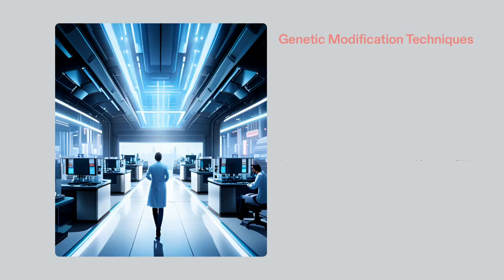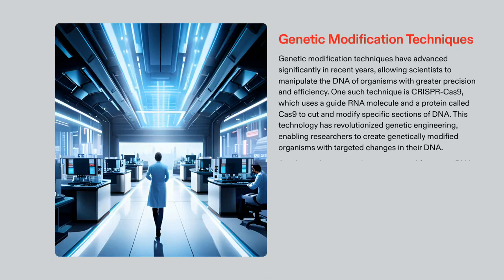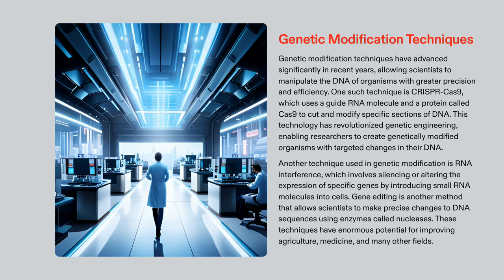Scientists now have access to more refined and effective methods of genetic modification compared to former times. A notable example is the CRISPR Cas9 system, allowing researchers to cut and adjust chosen parts of DNA, enabling the creation of organisms whose DNA is subject to precise modifications. Other procedures, such as RNA interference and gene editing, utilize small RNA molecules and nucleases to modify gene expression and affect exact DNA sequence changes.